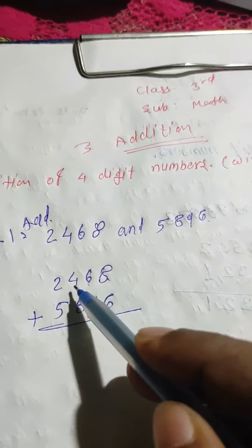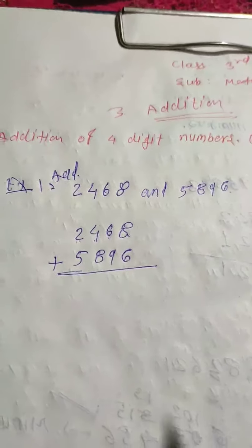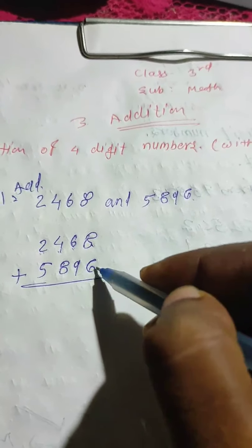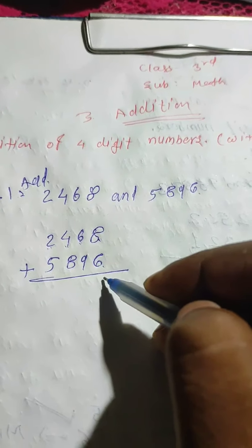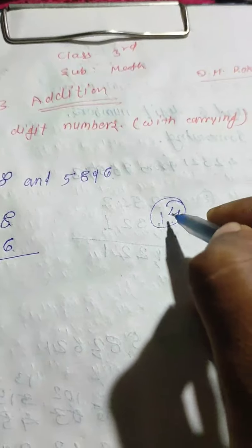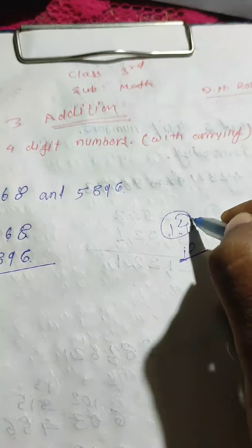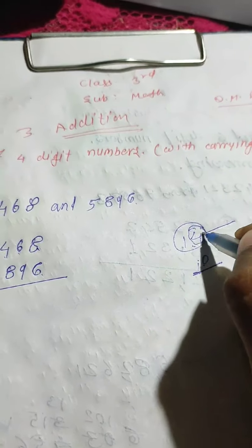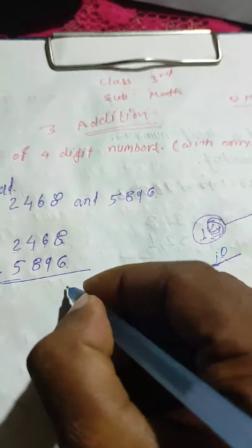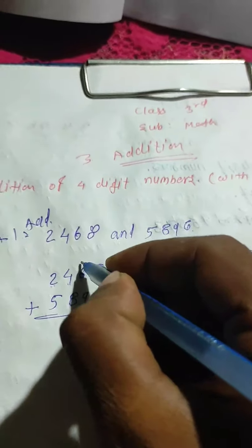There are four digit places: ones, tens, hundreds, and thousands. First we add the ones place - eight ones plus six ones equals fourteen ones. Fourteen ones includes one ten: ten plus four equals fourteen. So you write four in the ones place.